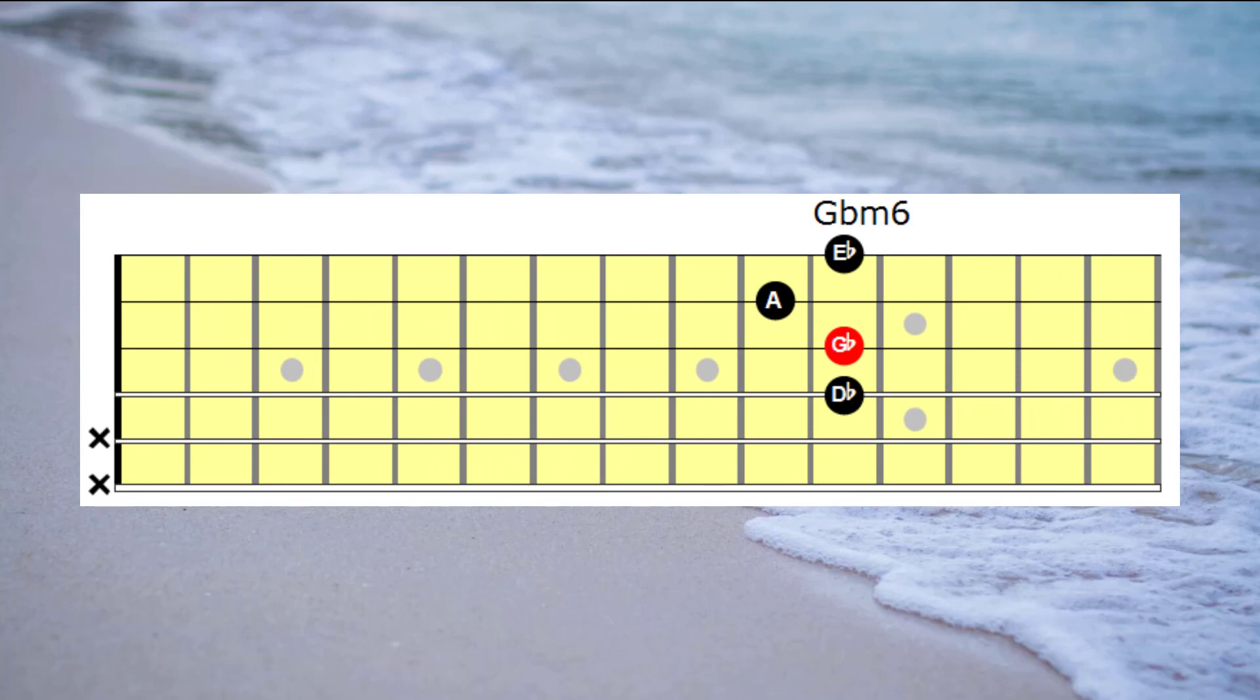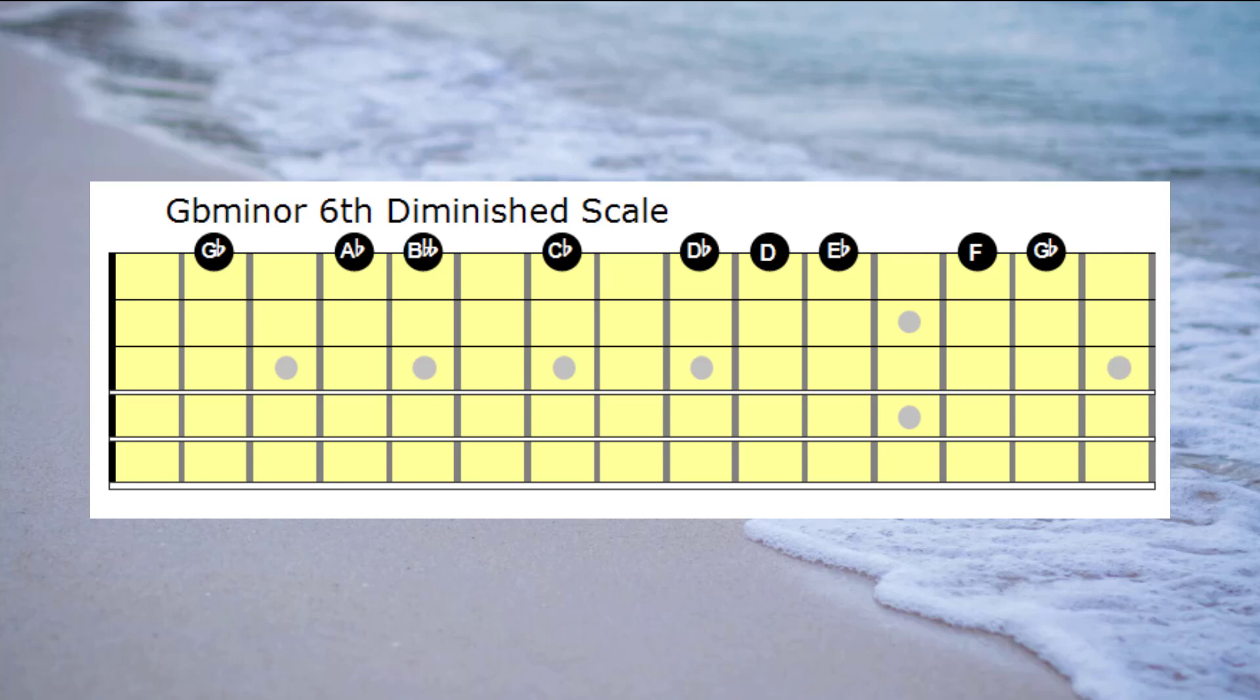The next step will be to go through and learn the notes in the G flat minor 6th diminished scale. And we'll learn this scale on the first string. Here are the notes in the G flat minor 6th diminished scale: G flat, A flat, B double flat, C flat, D flat, D flat, E flat, F.